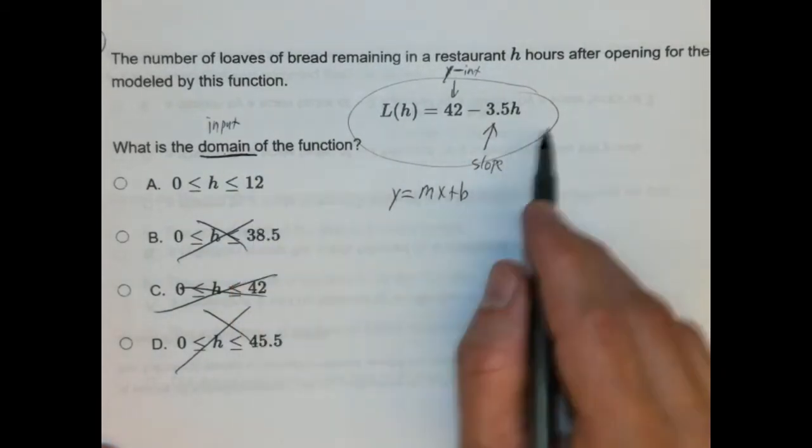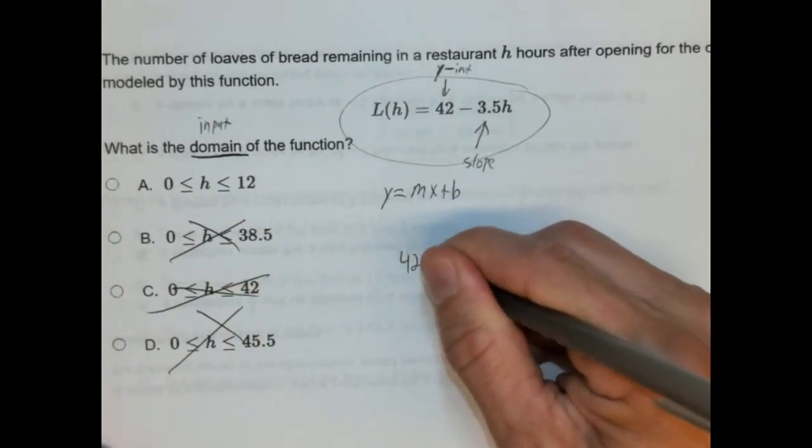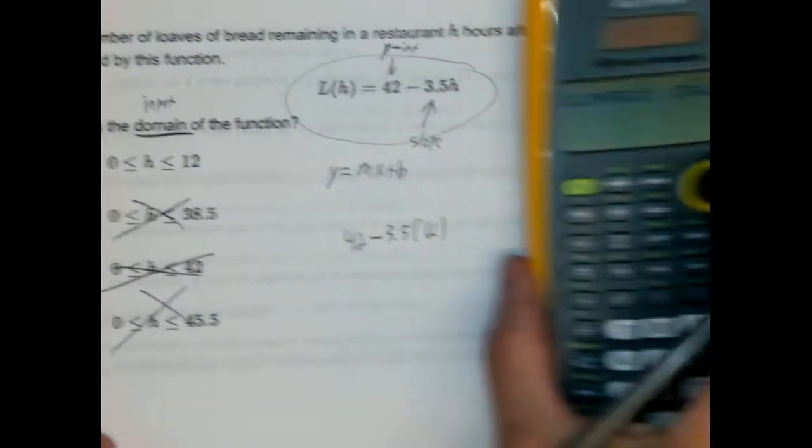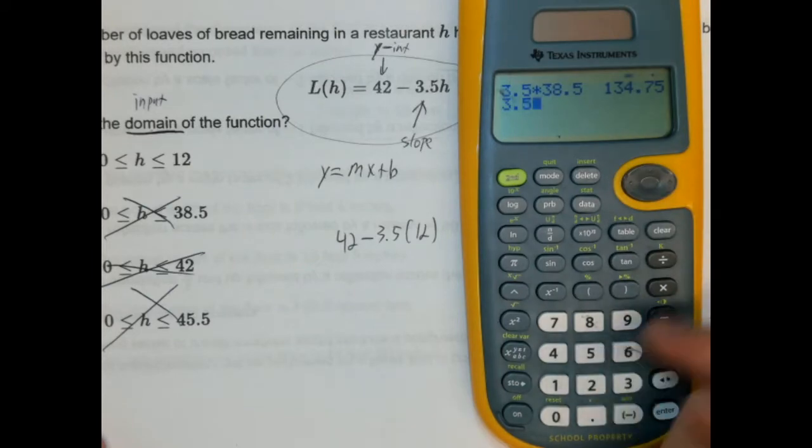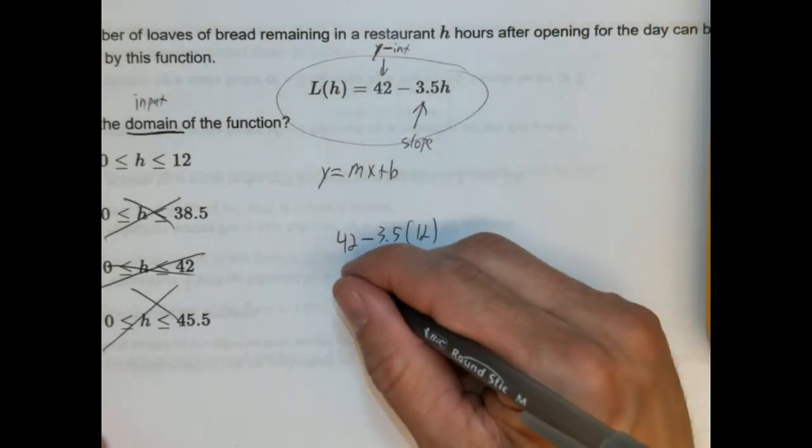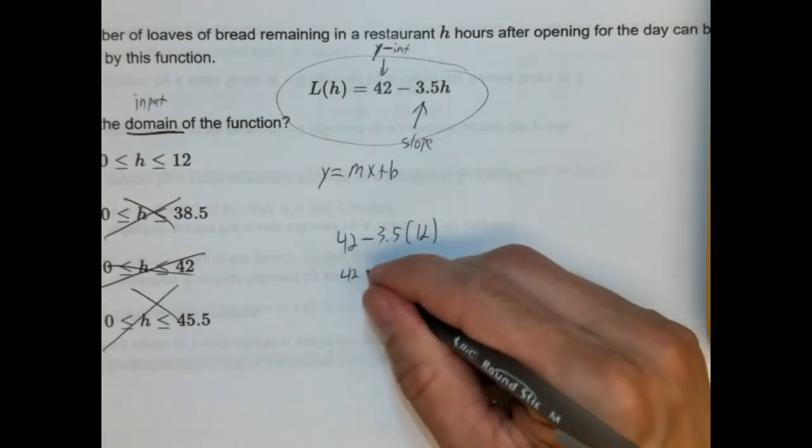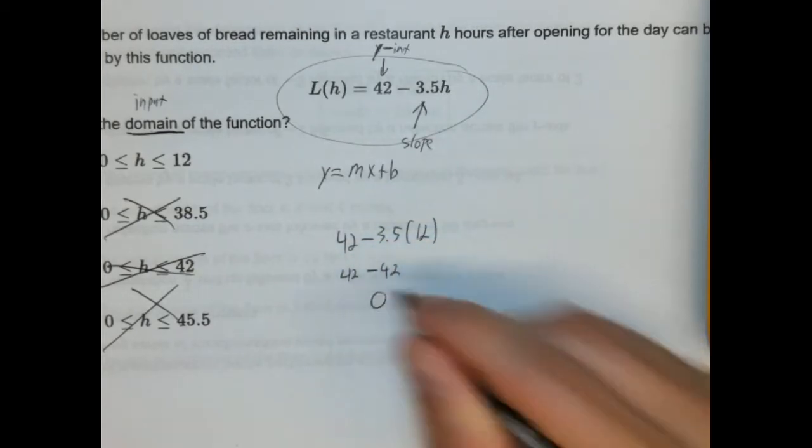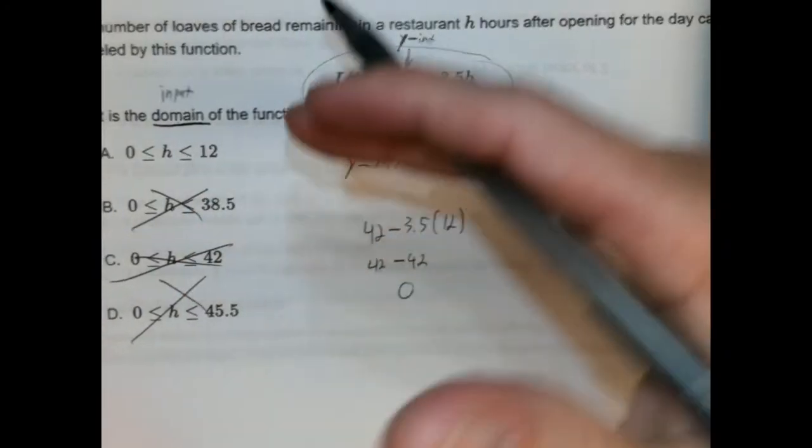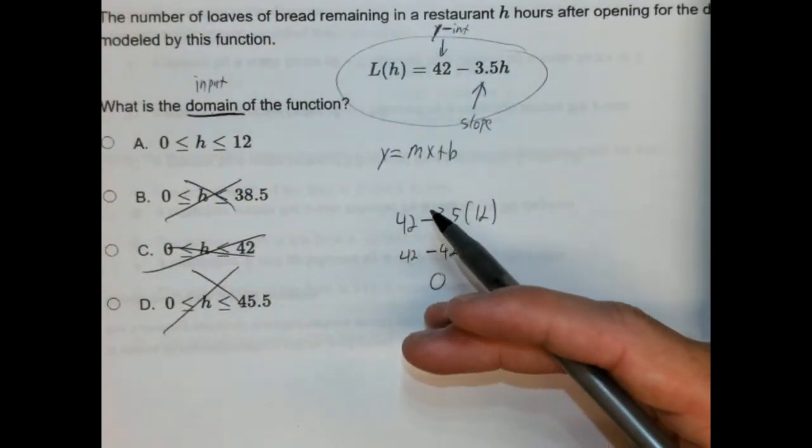So let's see here. It's three and a half times 38 and a half. Oh yeah, that's definitely bigger than 42. So we can already tell immediately it's part A. We just understand that we can't have negative loaves of bread. Well, let's just test this out. Let's plug in 12 for H and see what happens. So we're going to do 42 minus three and a half times 12 and see what we get. So three and a half times 12 is going to give us 42. So 42 minus 42 is zero. So this is perfect. That means we get to zero loaves of bread.